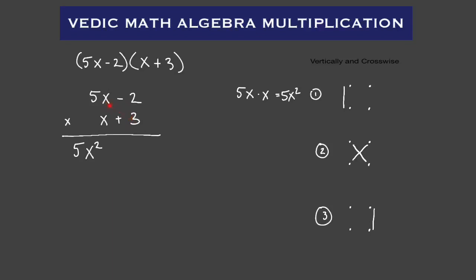Step number two, we're going to do crosswise: five X times three plus negative two times X. Five X times three gives us 15 X. Negative two times X gives us negative two X. So 15 X plus negative two X is the same as 15 X minus two X, which gives us 13 X. So our middle term is positive 13 X.